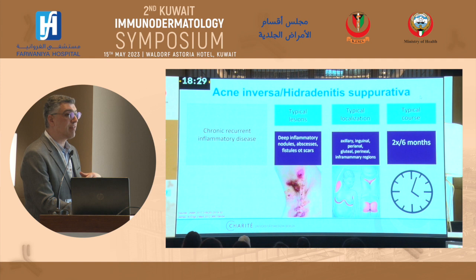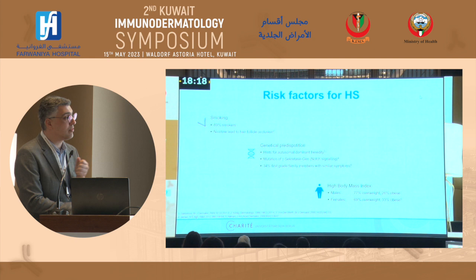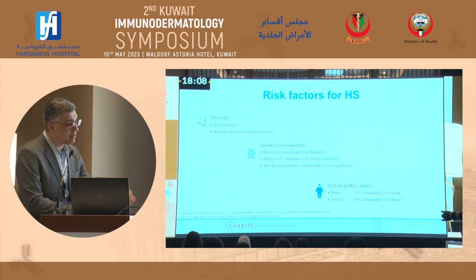We also have risk factors, though these are not important for the diagnosis. Most patients are smoking. Some have a genetic predisposition — about one third of patients have a positive family history for HS. We have identified some mutations, perhaps in the gamma-secretase gene, a loss-of-function mutation in some patients. And of course we have high BMI in both male and female patients.